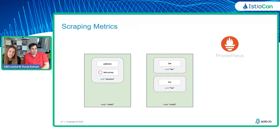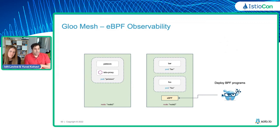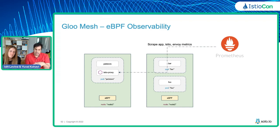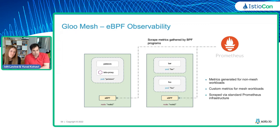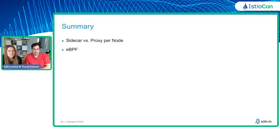eBPF can definitely help here — it's a natural fit for observability. Because eBPF is at the kernel level, we can inject an eBPF program to nodes and gather metrics from all applications that run there, regardless of whether they're injected with a sidecar or not. We deploy one eBPF program per node. You don't need to change your pods or anything — it has its own lifecycle. Prometheus can then scrape these programs in addition to Envoy and the apps. This way you can get metrics from everywhere — the best of both worlds. We can create an eBPF program that gives us observability for our entire network, not just the mesh, plus kernel features that Envoy simply cannot give us metrics for.